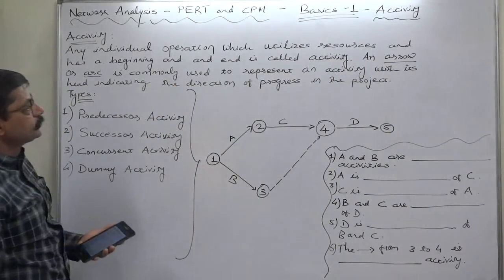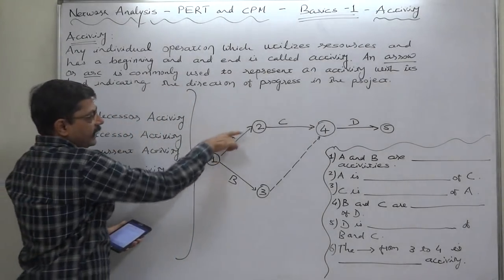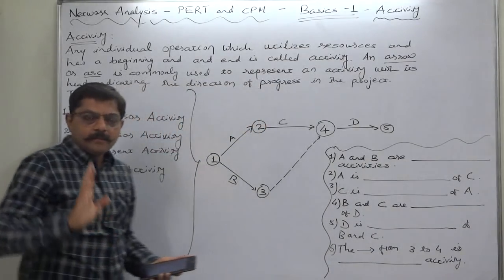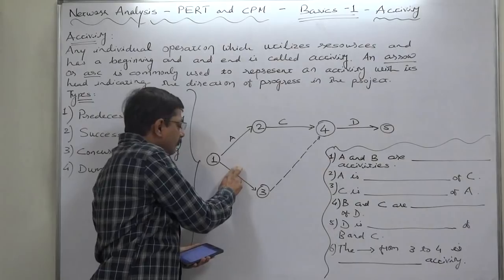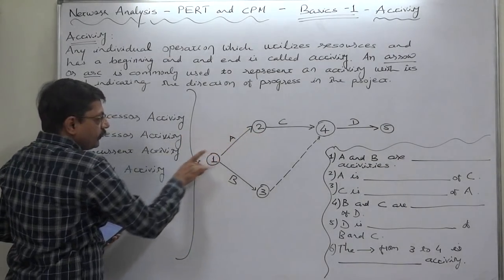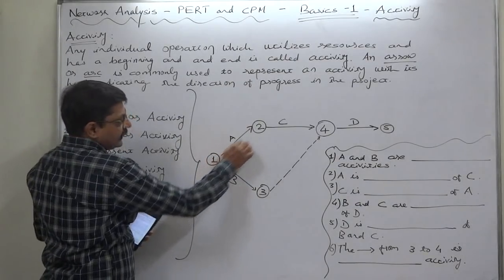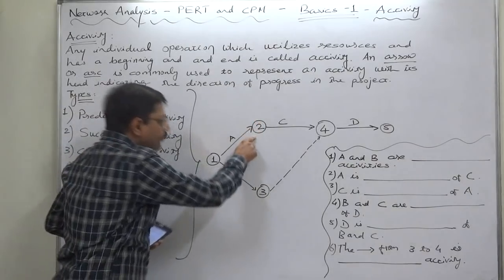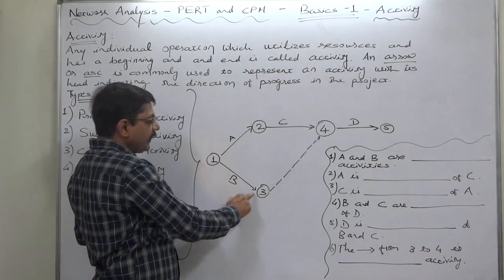An arrow or arc is commonly used to represent an activity, with its head indicating the direction of progress in the project. In network diagrams we use alphabets — each alphabet has a description of what exactly the activity is. The arrow's head shows the direction of progress: A starts, A ends, B starts, B ends — that shows progress in the project.